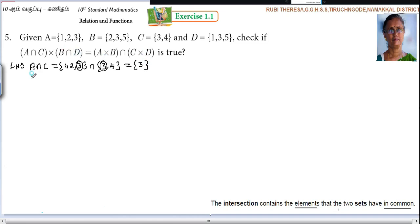Next what you should find out? B intersection D. So which set you have to write? B set. 2, 3, 5. Intersection. D set you should write. 1, 3, 5. So what are the common elements here? 3, 5. But it is not necessary to draw the circle, rectangle and all. If you know the answer, you can write directly. For the late bloomers, I am doing this.